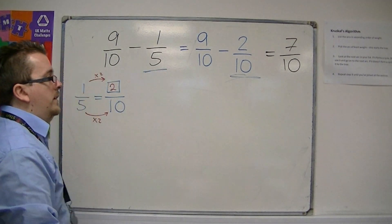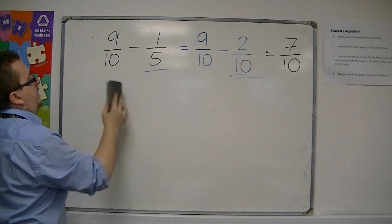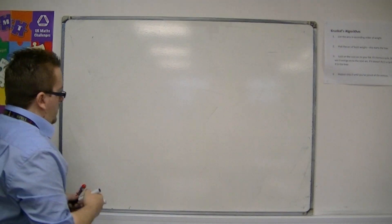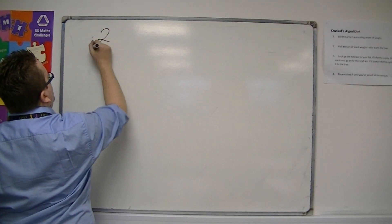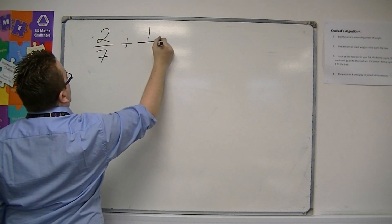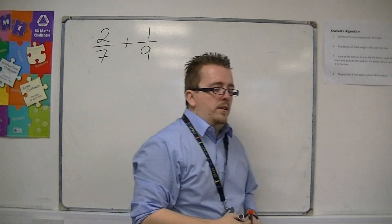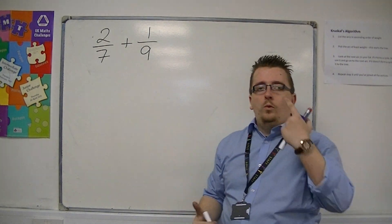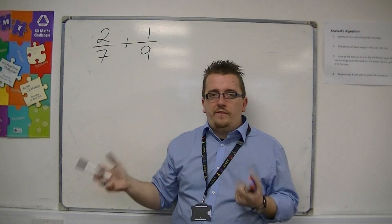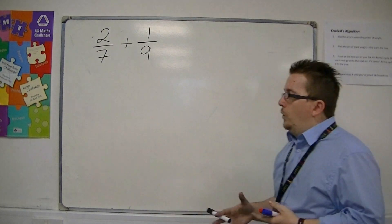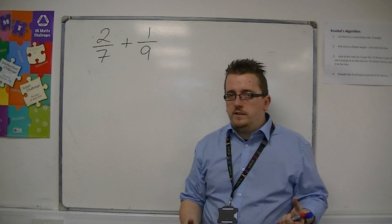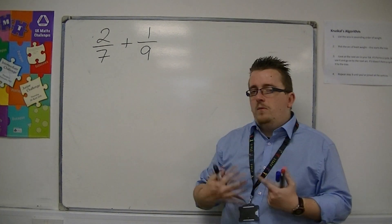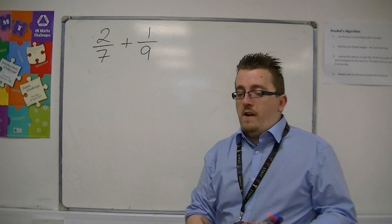However, there are going to be cases where it's not as nice as this. If you have something like 2 sevenths plus 1 ninth, then we've got a problem in that it's not particularly easy to find a number that goes into both 7 and 9, or rather, that 7 and 9 are both factors of. So the way to do this is to, in much the same way as we did before, find equivalent fractions that work.